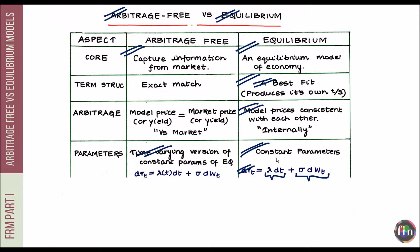However, this might look like a trivial exercise, but the problem is that while you have achieved an exact match to the term structure via a time-varying lambda, you have altered the dynamics of how interest rates evolve. If lambda changes every period going forward, you are incorporating into the model the assumption that both the expected evolution of the short rate and the risk premium change for every period going forward, and that change might not be economically plausible.